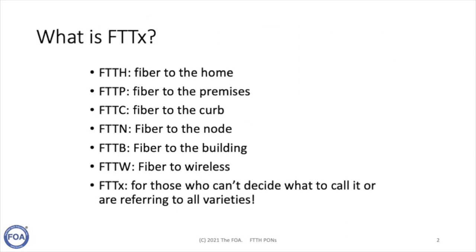When Fiber to the Home first became a viable technology about a decade ago, there were lots of different options and lots of different acronyms used: Fiber to the Home, Fiber to the Premises, Fiber to the Curb, Fiber to the Node, Fiber to the Building, Fiber to Wireless. We sort of lumped them all into FTDX for those referring to all the varieties. We're going to talk about some of those varieties now, explain them, and discuss why they have been accepted or rejected since Fiber to the Home was first proposed.